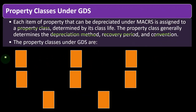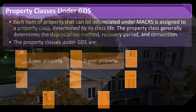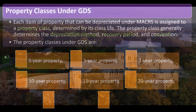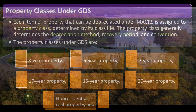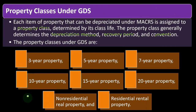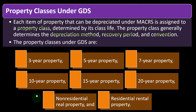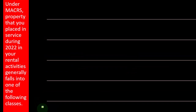The property classes under GDS include: 3-year, 5-year, 7-year, 10-year, 15-year, and 20-year property, plus non-residential real property and residential rental property. Once an asset is placed into one of these buckets, those classifications drive the essential figures needed to calculate depreciation — or to populate the tax software to calculate it for you. Property placed in service during 2022 in rental activities generally falls into one of these classes.